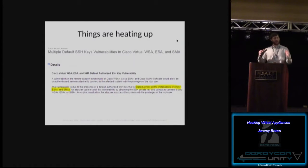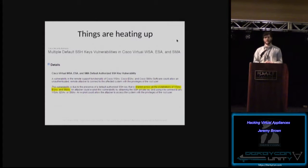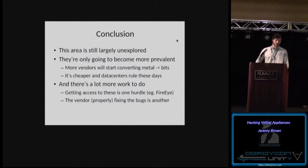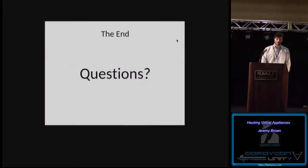Things are really heating up. Cisco WSA, ESA, and SMA — they actually left the private keys on the virtual appliances. Once leaked and you get root access with these, they released an advisory a month or two ago about it. People are starting to pay attention to these appliances. There's a lot of stuff to do here, and they're only going to become more prevalent — metal to bits just makes sense these days. It's cheaper, data centers are everywhere, cloud everywhere. But getting access to these is one hurdle, and getting them properly fixed is another — like the Sophos bug from two years ago that's still there.